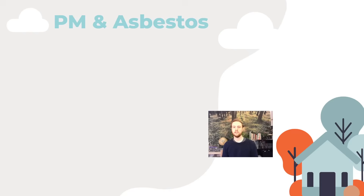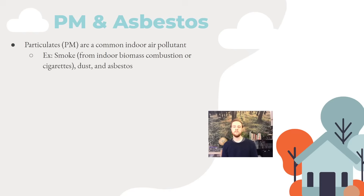Next, we'll look at particulate matter and a specific particle called asbestos. Particulates are little bits of suspended solids in the air. When talking about indoor air pollutants, these are primarily smoke — from combustion of biomass indoors in developing nations, or cigarette smoke and dust in more developed nations. Asbestos is also considered a type of particulate matter with specific health impacts.